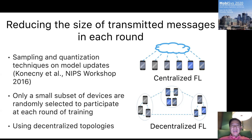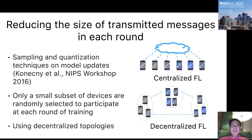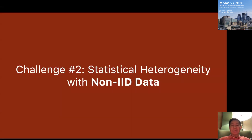If we dramatically reduce the number of devices selected in each round, we dramatically reduce the communication work with the server. However, that leads to challenge number two: statistical heterogeneity with non-IID data.